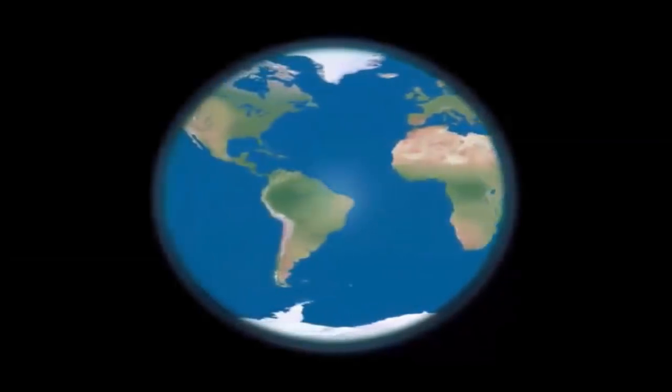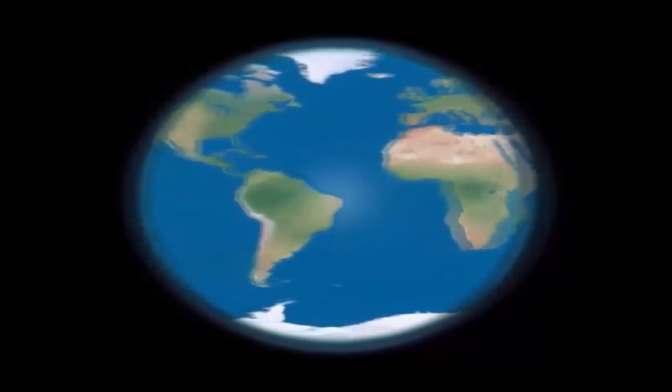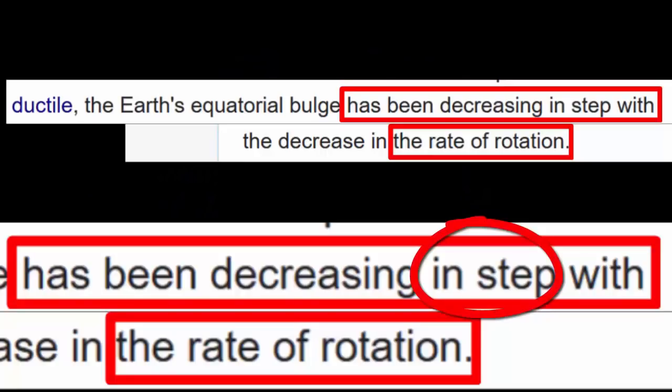So that means if the Earth speeds up, the bulge gets bigger. If the Earth slows down, the bulge gets smaller. So for all those who like to say that the bulge happened when the Earth was being formed, you can't say that, or you have to change Wikipedia and all the science books.